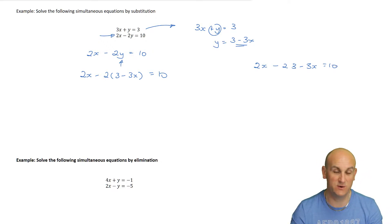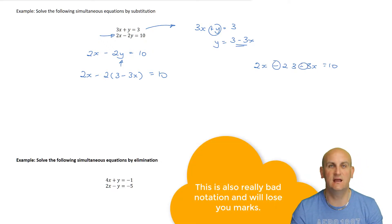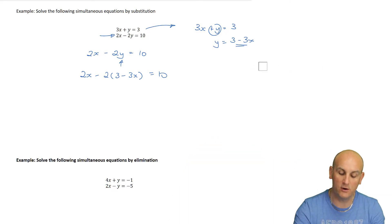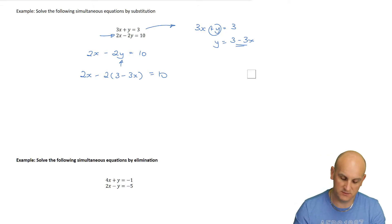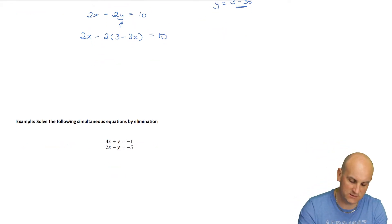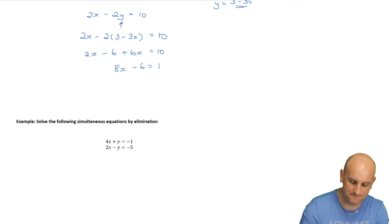In the heat of an exam you might misread signs, and many people actually make mistakes just with basic algebra rather than the bigger concepts. Moving this up and solving: 2x minus 6 plus 6x equals 10. Simplification gives 8x minus 6 equals 10. Add 6 to both sides: 8x equals 16, so x equals 2.